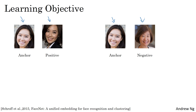In the terminology of the triplet loss, what you're going to do is always look at one anchor image, and then you want the distance between the anchor and a positive image — a positive example, meaning it's the same person — to be similar. Whereas you want the anchor, when paired or compared with a negative example, for their distances to be much further apart. This is what gives rise to the term triplet loss, which is that you always be looking at three images at a time: an anchor image, a positive image, as well as a negative image. I'm going to abbreviate these as A, P, and N.